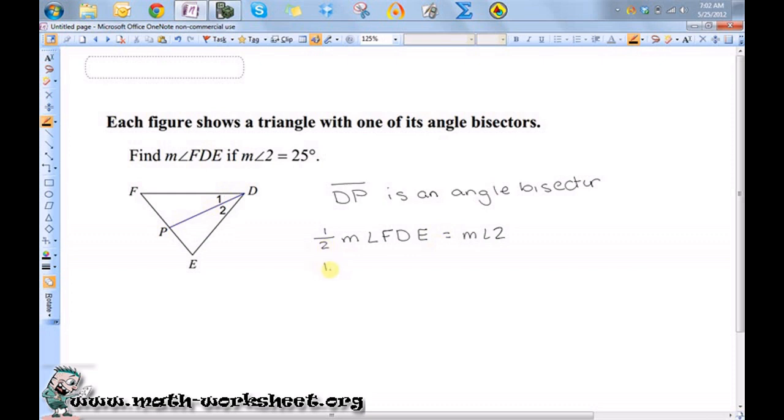Well, I know the measure of angle 2 is 25, so let's actually rewrite this as the measure of angle FDE is equal to 2 times the measure of angle 2. So I just multiplied both sides by 2. Well, I know the measure of angle 2 is 25, so I know that the measure of angle FDE must equal 50 degrees.